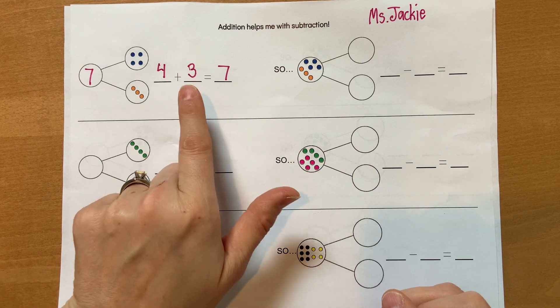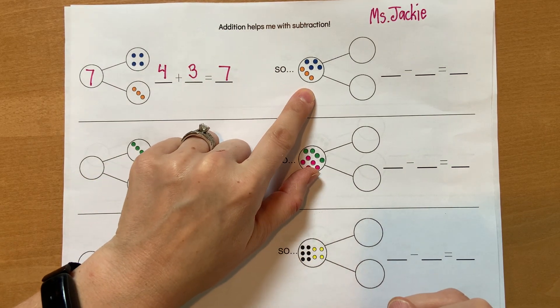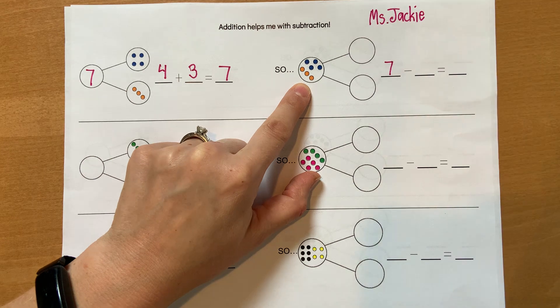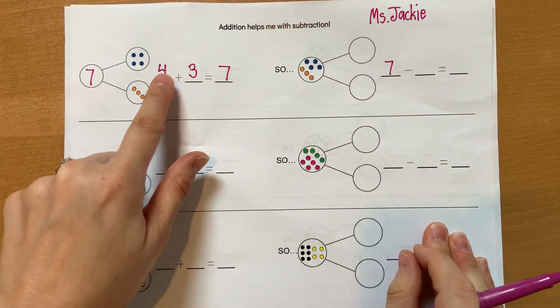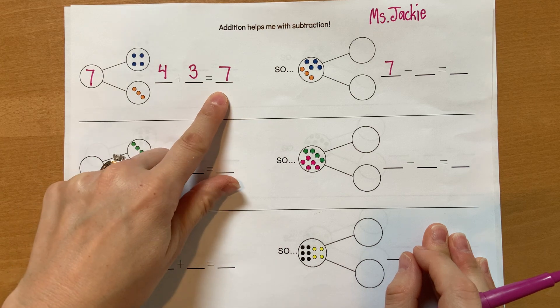All right, but it's much harder to do subtraction, and a lot of kids are like seven minus something. Oh, that's hard, but it's not hard. You already know four plus three is seven.